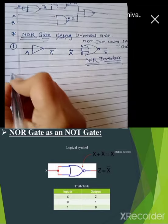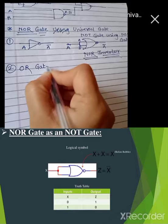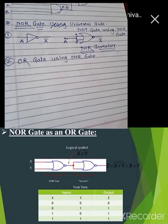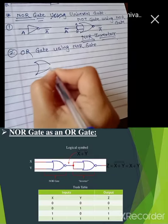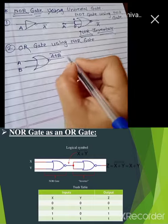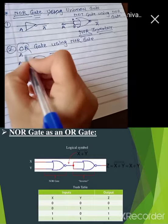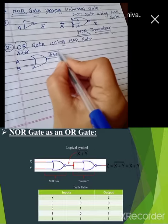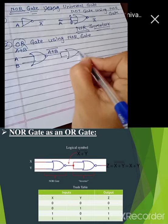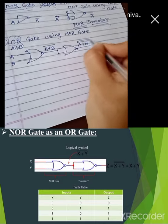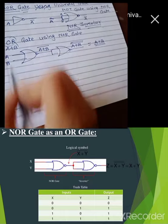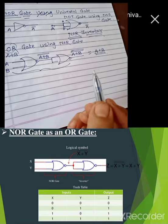Now we will see OR gate using NOR gate. We take one NOR gate and give inputs A and B. It gives A plus B whole bar. But we do not want this complement since the OR equation is A plus B. So we connect a NOR inverter here, which gives A plus B double bar. This double bar cancels according to inversion law and finally we get A plus B — same as OR gate. So this design is OR gate using NOR gate.